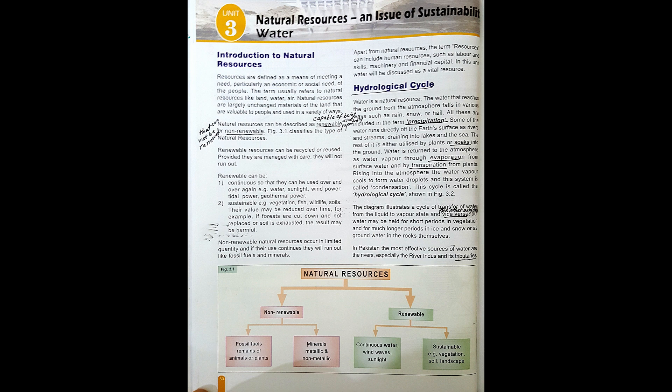As you can see from the figure, there are two types of resources: non-renewable and renewable. In non-renewable, we see fossil fuels, remains of animals or plants, minerals — metallic and non-metallic. In renewable, we have continuous resources such as water, wind, waves, sunlight; and sustainable resources such as vegetation, soil and landscape. Renewable resources can be recycled or reused — provided they are managed with care, they will not run out.